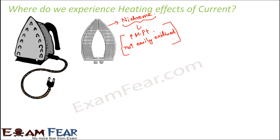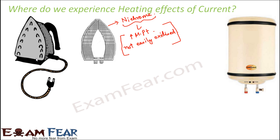The iron is not the only example. Another example is the geyser, which we use in our bathrooms to heat water. Inside the geyser there are materials known as heating elements, because it is due to those elements that the heating effect of current is experienced. The nichrome element inside the iron would similarly be termed as the heating element of the iron.